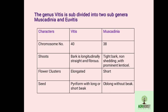The shoots in Vitis species have longitudinally straight and fibrous bark, whereas in Muscadinia the bark is tight and non-shedding with prominent lenticels. The flower cluster in Vitis is elongated, whereas in Muscadinia it is short. The seeds in Euvitis are pyriform with long and short beak, whereas in Muscadinia they are oblong with and without a beak.